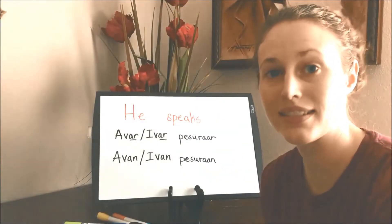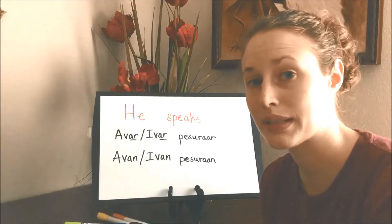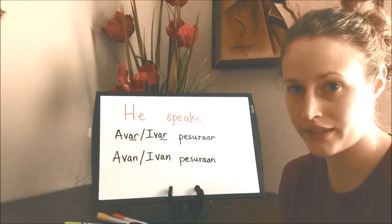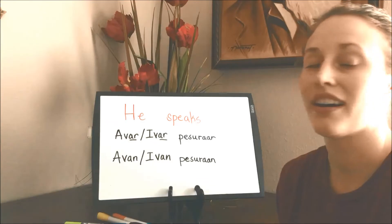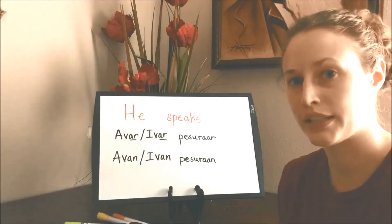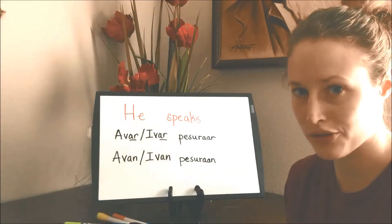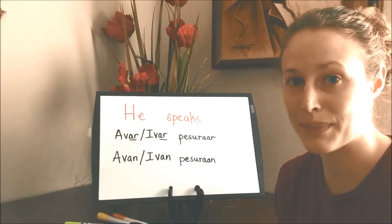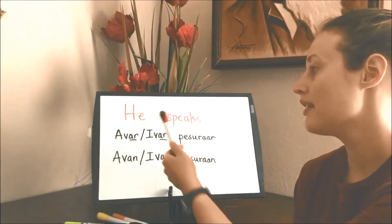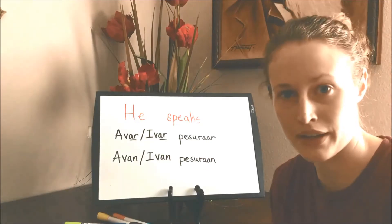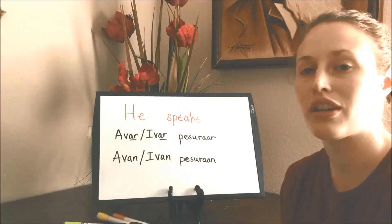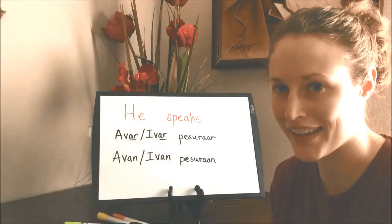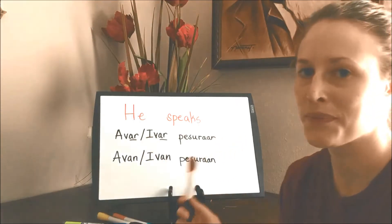For our next one, 'he speaks' — the root word is pesa. So 'he speaks' is going to be a voter piece of the other, a voter piece of the oven pace around, or even pace around, depending on which 'he' you use. Now the trick is that in Tamil, the verb comes at the very end.